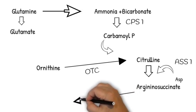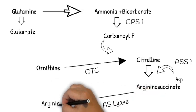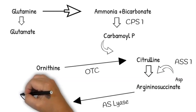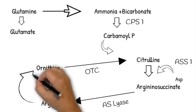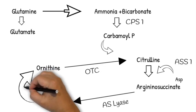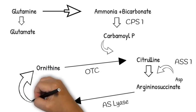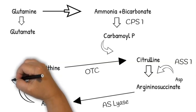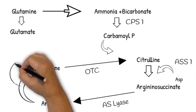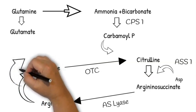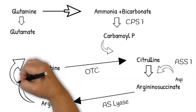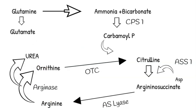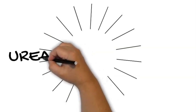The argininosuccinate is then converted to arginine through the action of argininosuccinate lyase. Once the arginine is formed, it is acted upon by the enzyme arginase, which results in the conversion of arginine to two compounds: firstly to ornithine and secondly to urea.